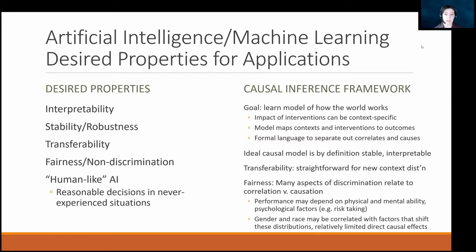Things people talk about include interpretability, stability or robustness of models — for example, a model predicting credit worthiness might not be stable following a global recession like COVID-19 — transferability, whether something estimated in one context works well in another, and whether algorithms are fair and discriminate. There's a general recognition that a lot of AI in the last ten years is pattern recognition and doesn't really have the human-like qualities we'd associate with intelligence, such as making reasonable decisions in circumstances it's never seen before.